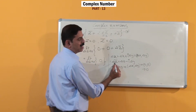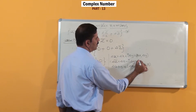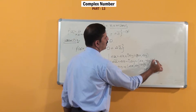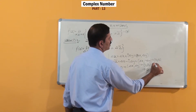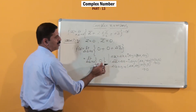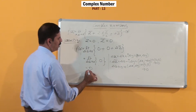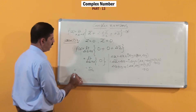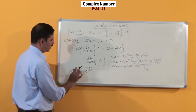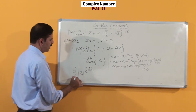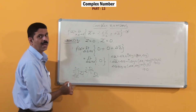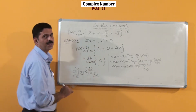In the same way, in Δz̄ = Δx − iΔy, it is also tending to 0. Therefore Δz̄ is also equal to 0, and the limit equals 0. Therefore, d/dz of |z|² is equal to 0 at z = 0.